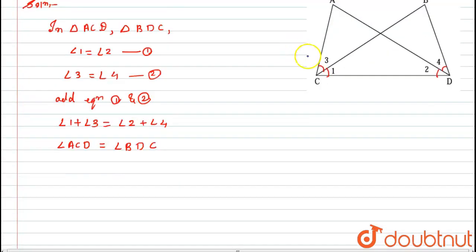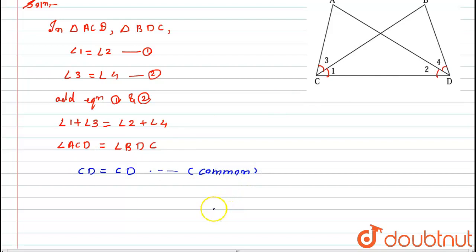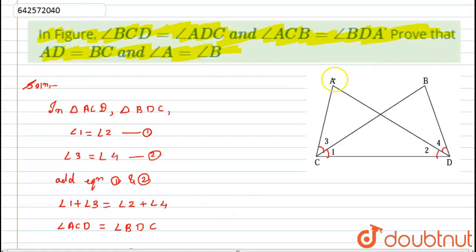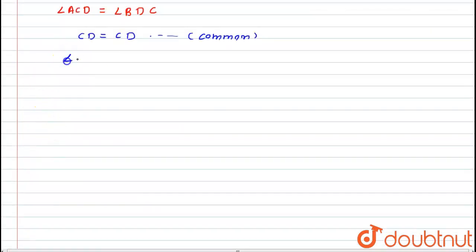Looking at the figure, we can see that CD is common in both triangles, so CD is equal to CD — this is because CD is common in both triangles. The next thing is that angle ADC is equal to angle BCD, as per the given.